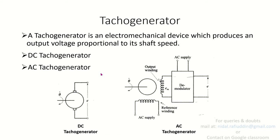The DC Tachogenerator comprises of an armature with a shaft through which input is given to the Tachogenerator. It produces the output voltage proportional to the speed given as input. The field arrangement comprises of north and south poles as the stator. Once the shaft is connected to the speed to be measured, the armature rotates and produces voltage E proportional to the speed with which it rotates.